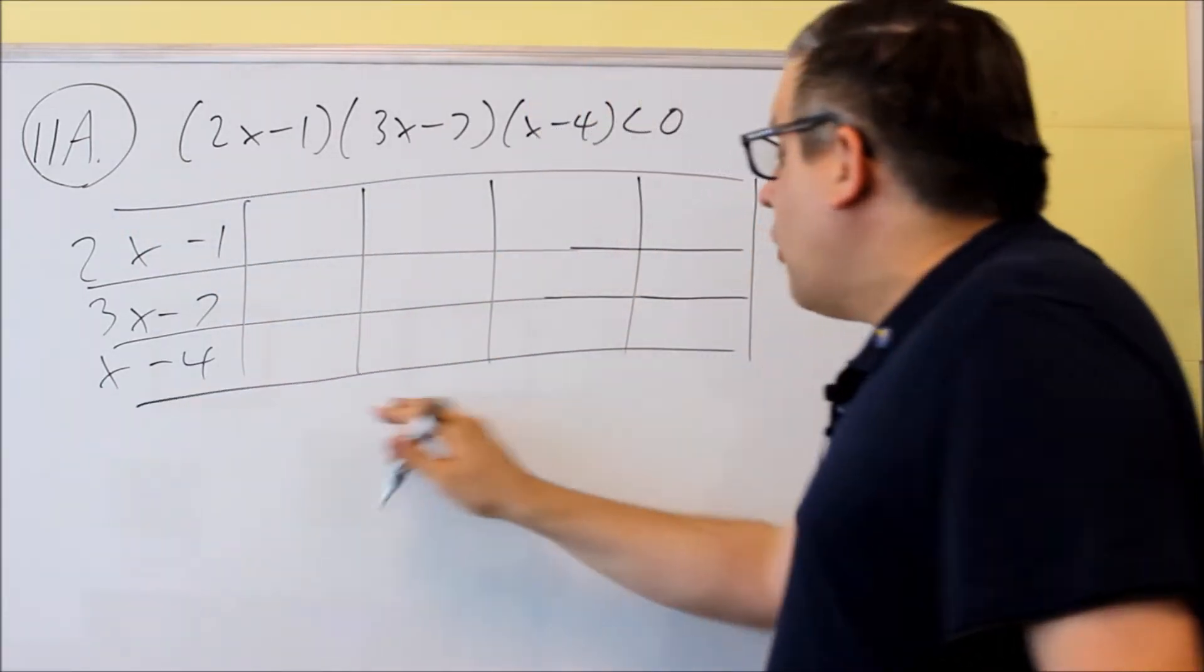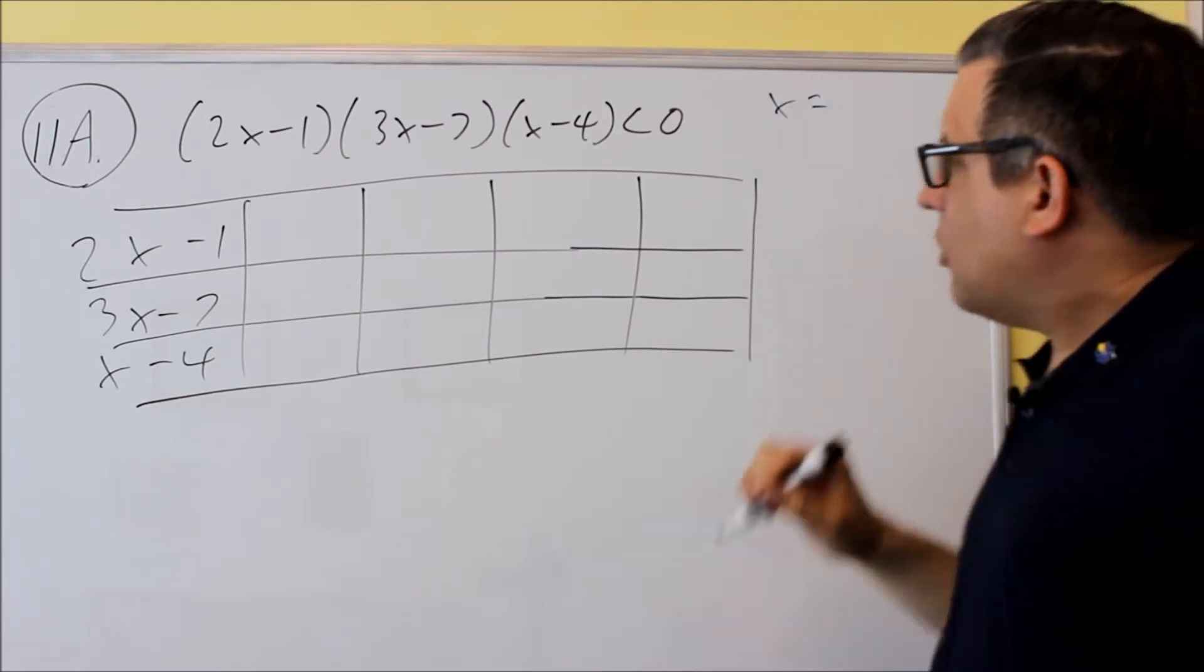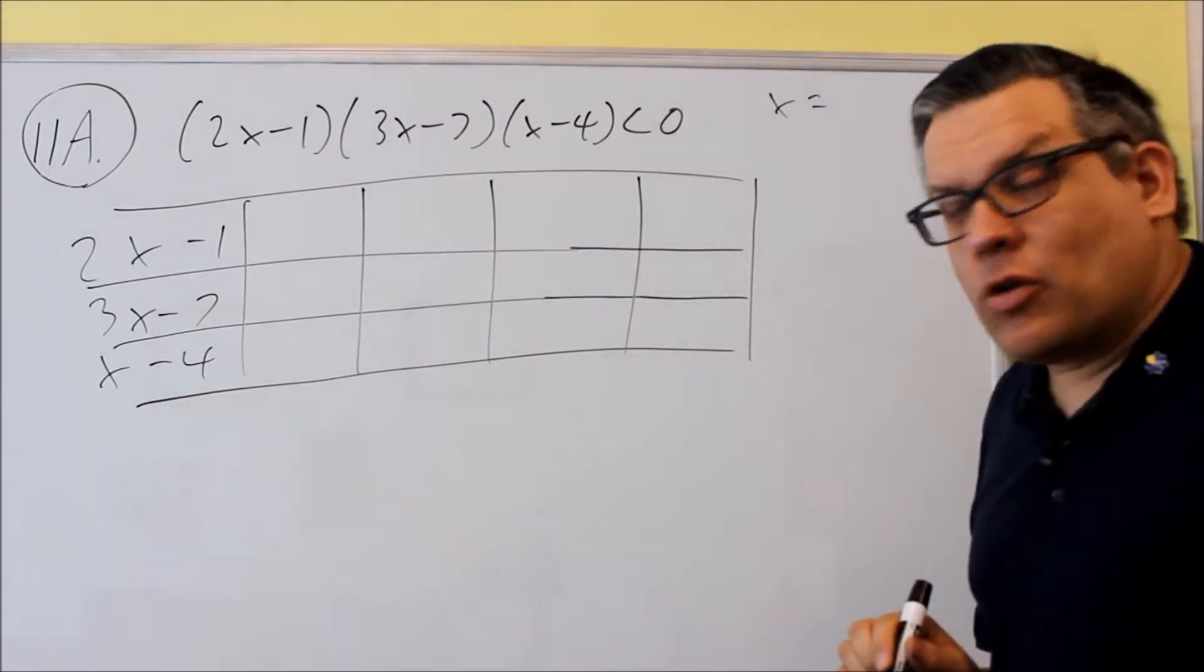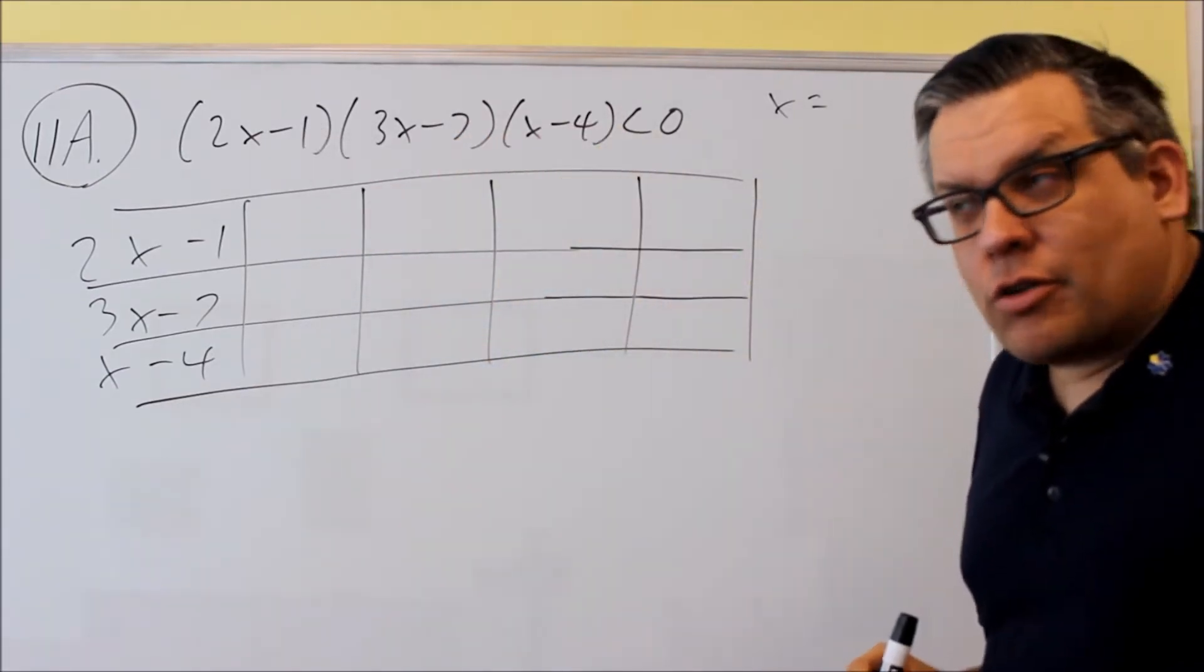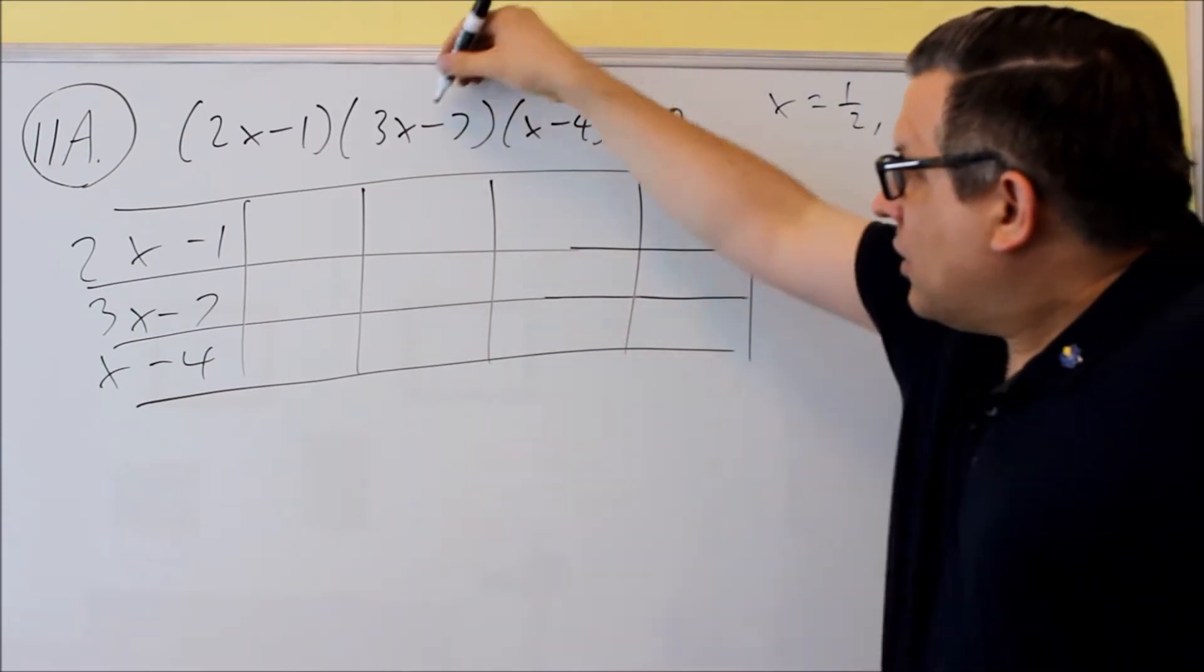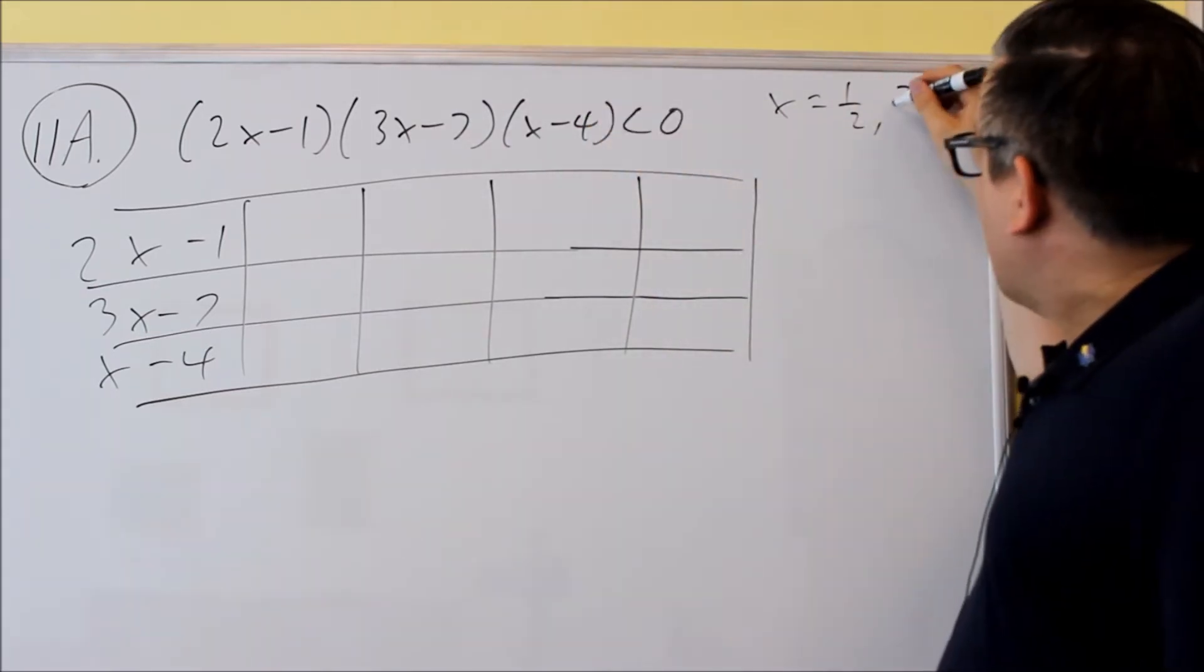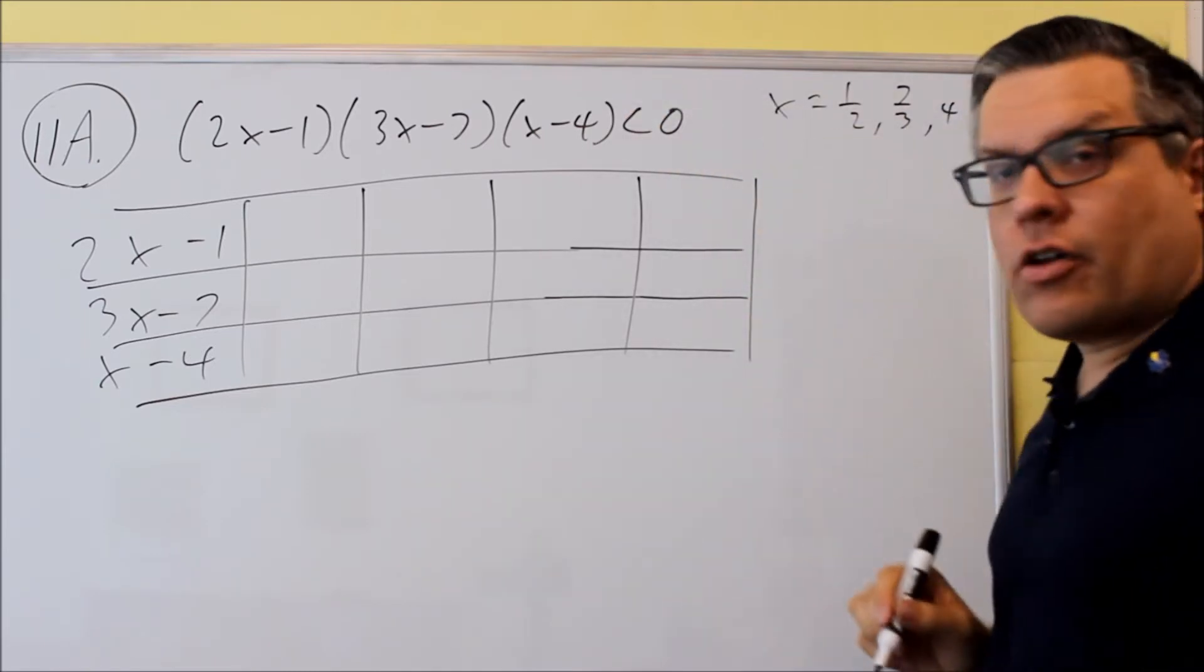Now I have to figure out what numbers are going to go here, so up here I need to figure out what my values are that are going to go on the table. I do that by setting each one individually equal to zero. So I'll take that first one set equal to zero, I'll get one half. Take that equal to zero, I'm going to get seven thirds. The last one I'll set equal to zero, and I'll get a four.